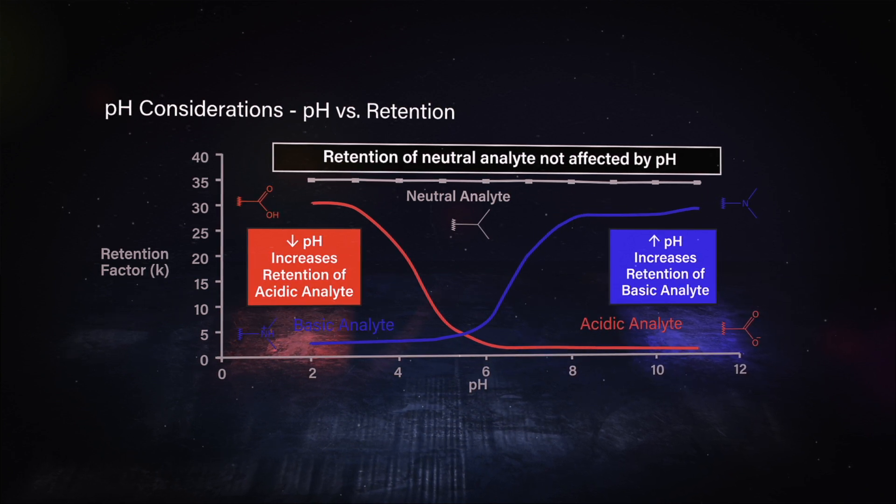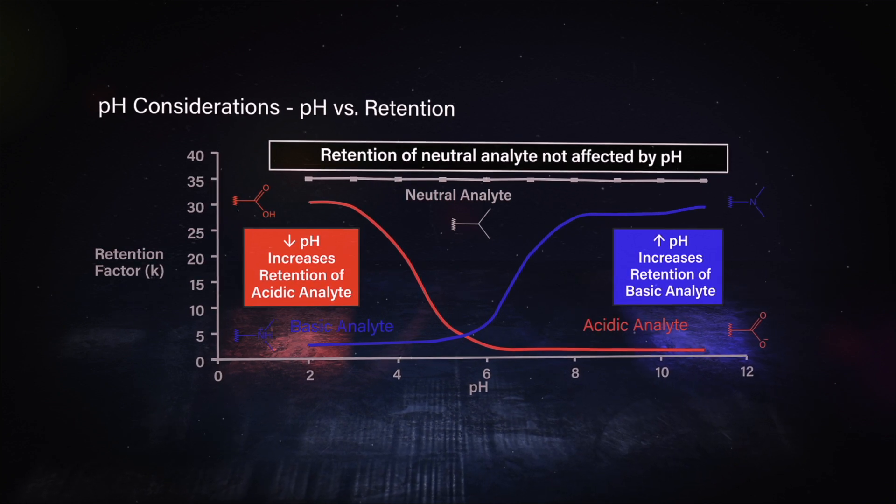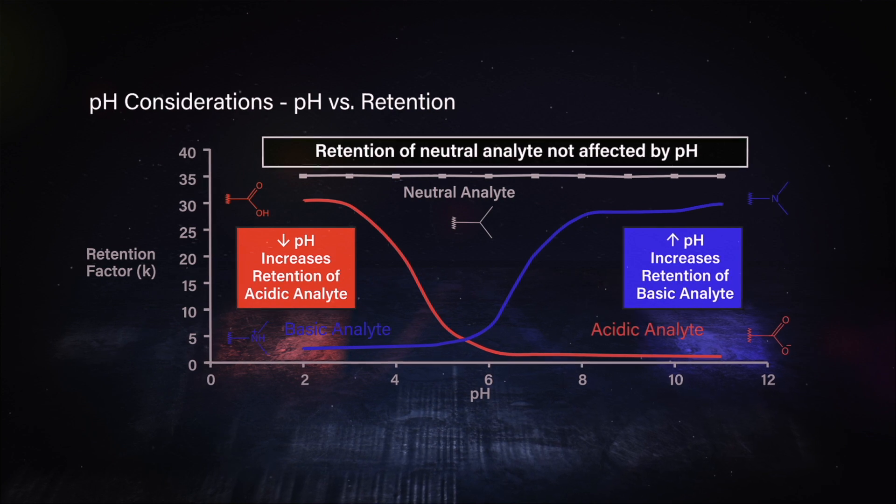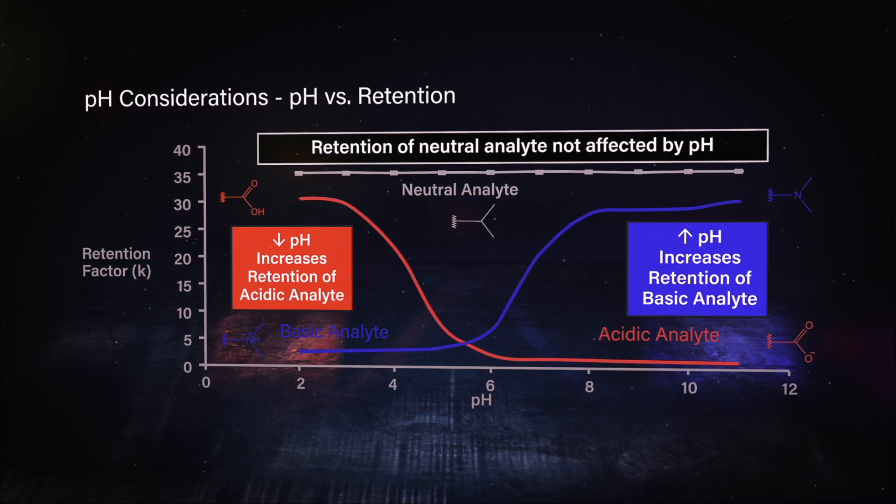Conversely, the blue line illustrates the basic compounds. And at low pH, those basic compounds become ionized or more hydrophilic, and in reverse phase, less retained.